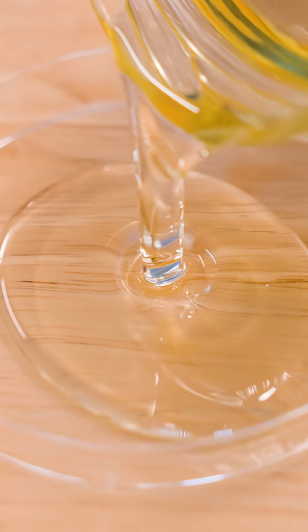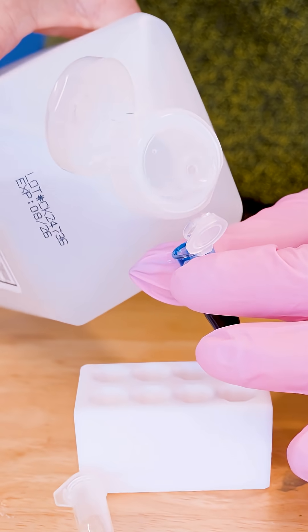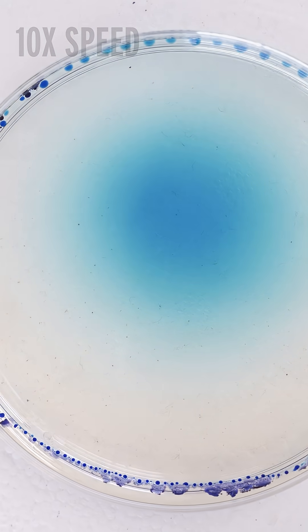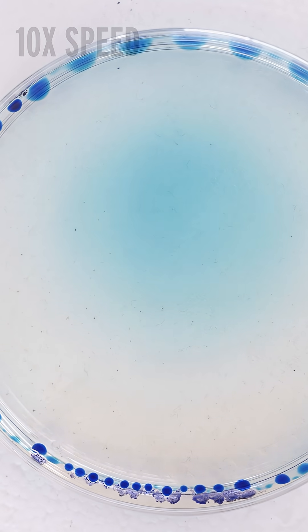All I have here is a dish of sunflower oil and a mixture of 50-50 isopropanol and methylene blue dye, which contains some water. When I drop the alcohol and dye mixture on top of the oil, it first spreads out to slowly cover the surface.